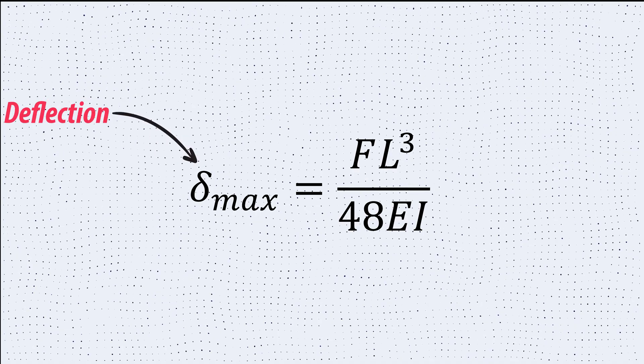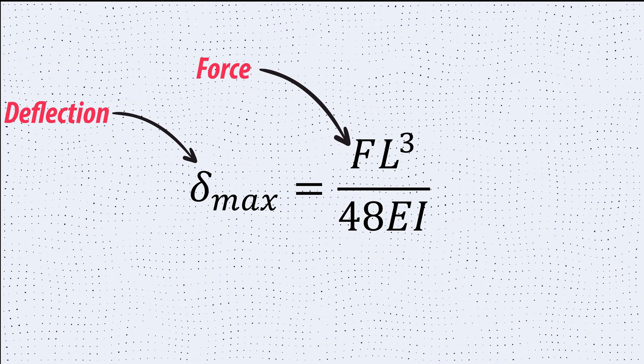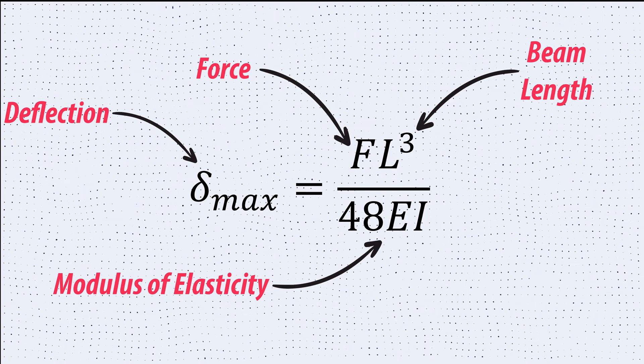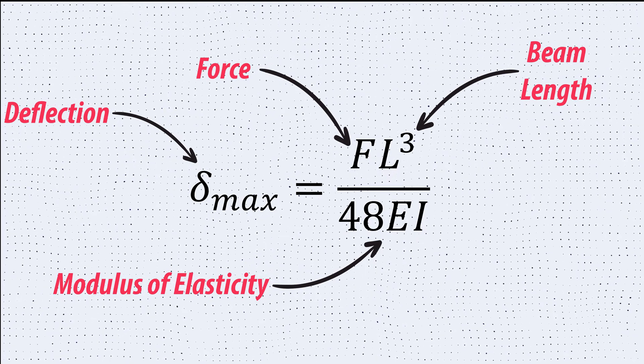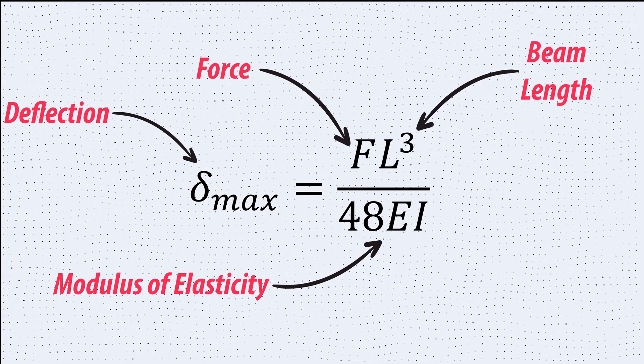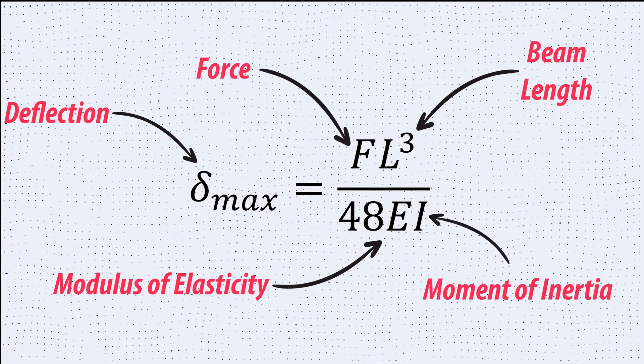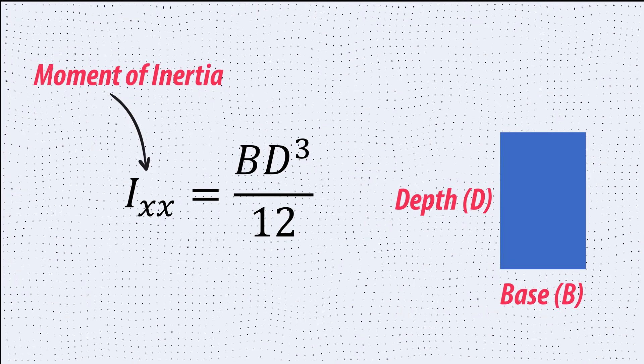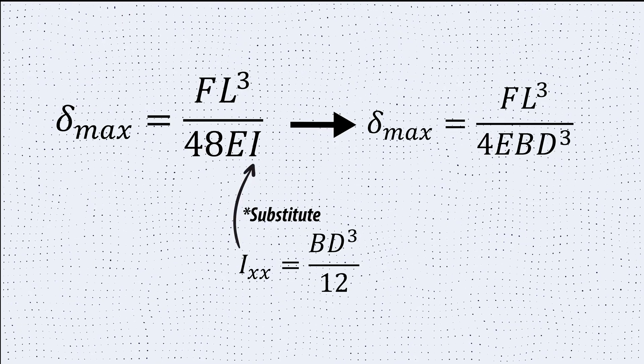This is the formula for beam deflection, where F is the force on the beam, L is the length of the beam, E is the modulus of elasticity, which is a mechanical property that describes the stiffness or rigidity of a material, and finally I, the moment of inertia, which is a measure of how resistant an object is to changes to its rotational motion.